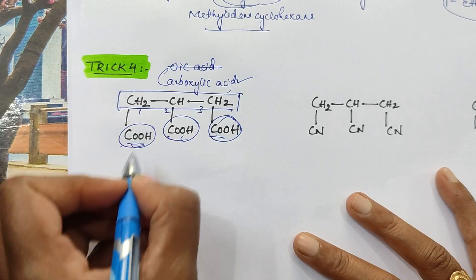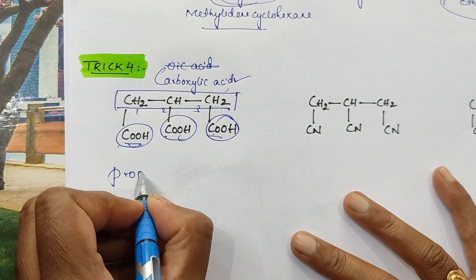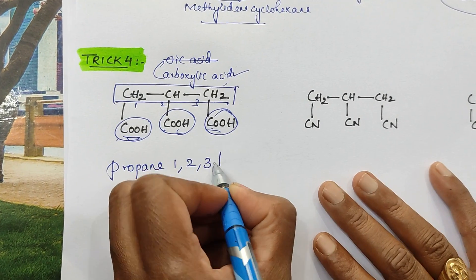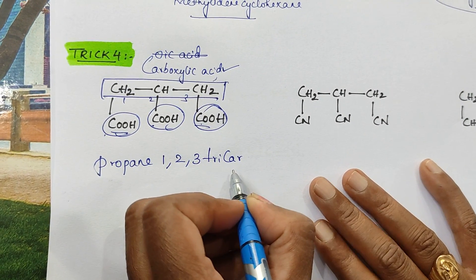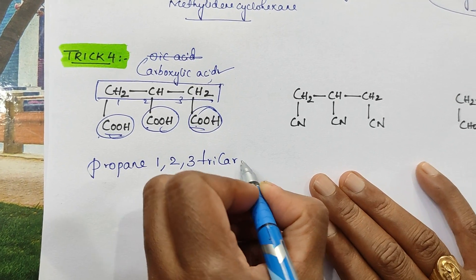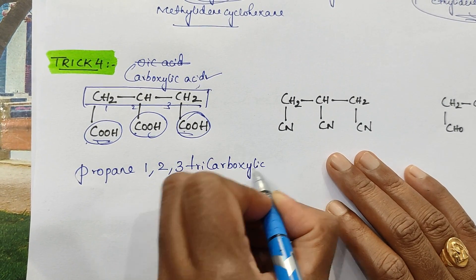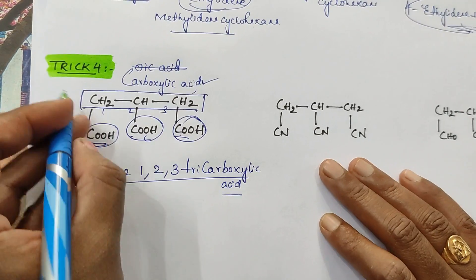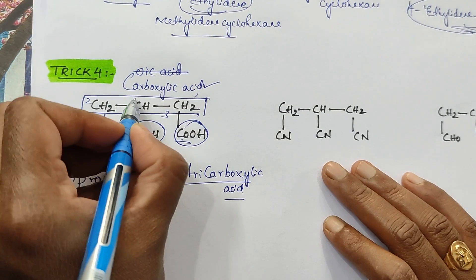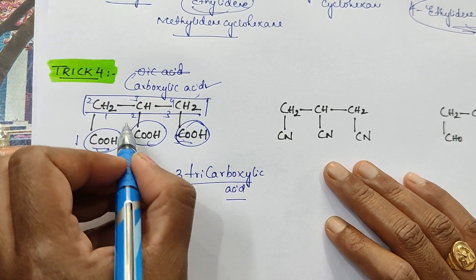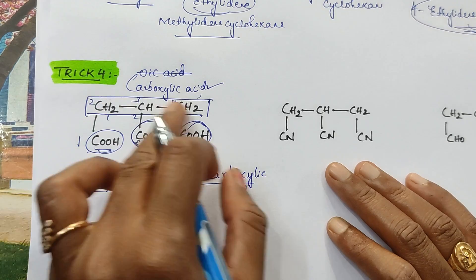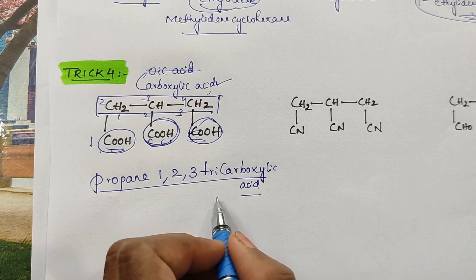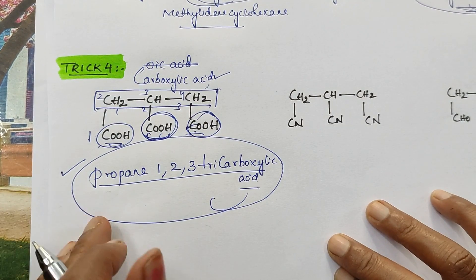So its name is: three carbons are there in the parent chain — propane, 1st position, 2nd position, 3rd position, carboxylic acid is there. So its name is propane-1,2,3-tricarboxylic acid. You can also include the carbons in the parent chain: 1, 2, 3, 4, 5. So you can say 3-carboxypentane-1,5-dioic acid also, but propane-1,2,3-tricarboxylic acid is the correct IUPAC naming.